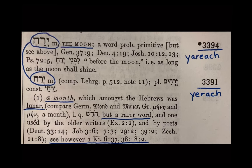Jensen clarifies: 'yerach' (two syllables, yod-resh-hey) can mean either moon or month, just like hodesh — it can mean a whole month or the festival of the new moon. If you want a word that specifically means the orb of the moon, it's the longer word 'yareach,' the three-syllable word. The participant's observation that yerach was used when specifically referring to a numbered month of the year is interesting and worth meditating on, Jensen notes.